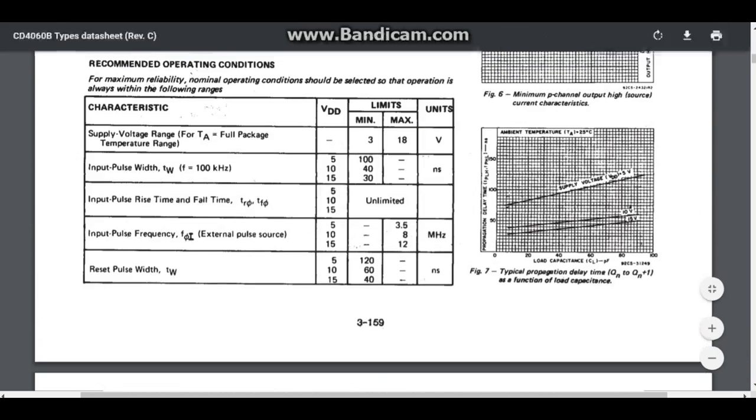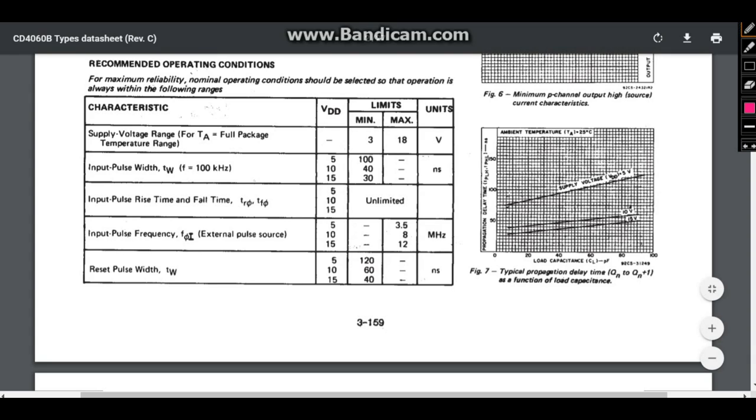We're going to come down here and look at these characteristics. So our supply range is 3 to 18 volts. I'm going to run today at 5 volts. It runs good there. There's no reason to overdrive it. You see input pulse rise times. It can take a pretty slow rise time. So that's really nice. And an input pulse frequency, if we're at 5 volts, of 3.5 megahertz. And a reset pulse width of a minimum of 120 nanoseconds. So it's a pretty wide range chip and it works very, very well.